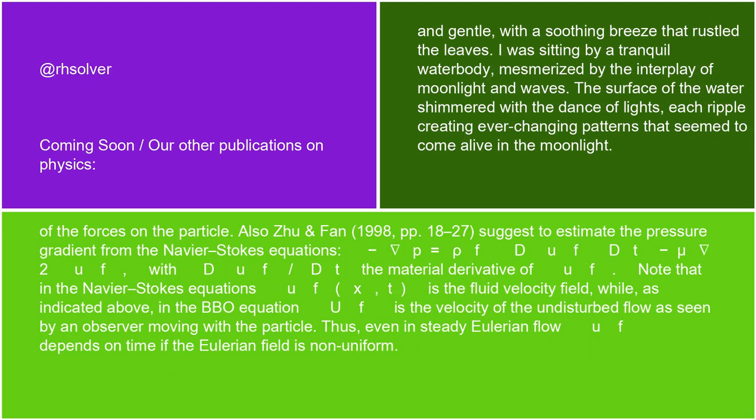Also, Zhu and Fan, 1998, pages 18 to 27, suggest to estimate the pressure gradient from the Navier-Stokes equations: -∇p = ρf duf/dt - μ∇²uf, with duf/dt the material derivative of uf.